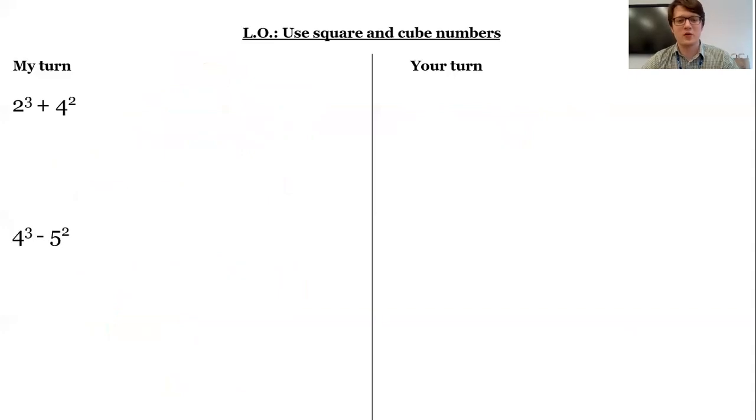Now, sometimes you get questions like this where you have to use these square and cube numbers to do something with. So in a question like this, well, first of all, I need to work out what is two cubed. What is four squared? So two cubed, I know, is eight. Two times two times two. Four squared is 16. Four times four. Add them together. I get 24.